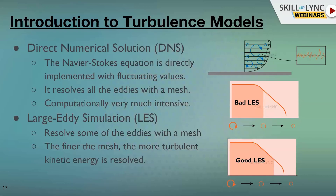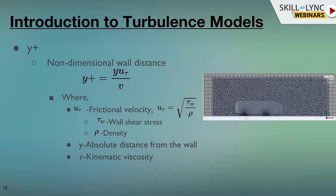Now coming to y-plus: for k-epsilon we need y-plus between 30 and 300, and for k-omega it should be close to one. Y-plus is a non-dimensional wall distance used to place the first layer of mesh near the wall. Using y-plus we calculate where the first layer of mesh has to be placed — at what distance from the wall. If you are using k-epsilon, you need to calculate your first layer height. Y-plus is known, y is the absolute distance from the wall, and u-tau is the frictional velocity given by the square root of wall shear stress divided by fluid density.